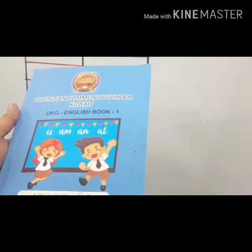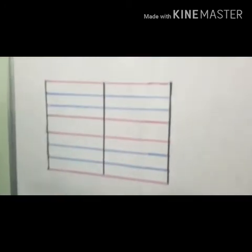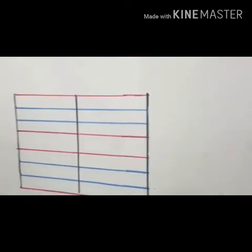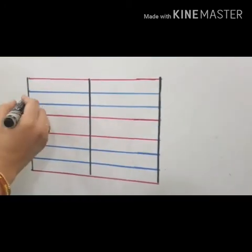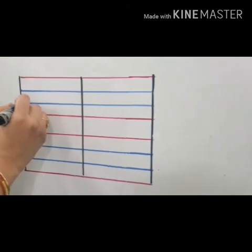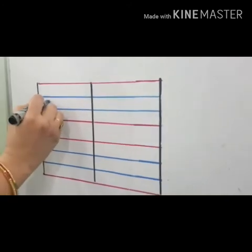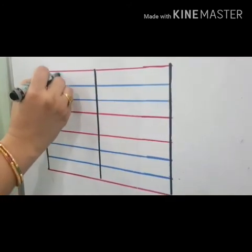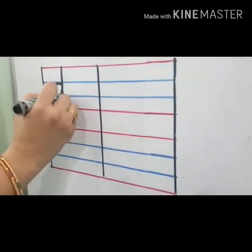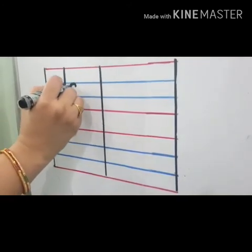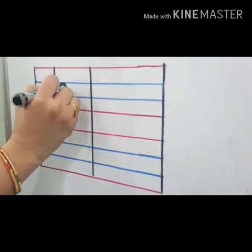Take out your English notebook. Open page number 11. Write neatly children. Say and write: D, O, do.